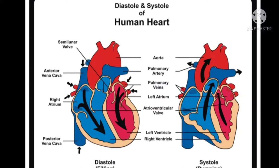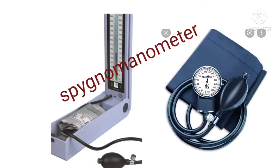When the ventricles contract, forcing blood out of the heart and into the arteries, then there is a drop in pressure as the ventricles refill. BP is always measured in the upper arm artery. BP varies throughout the body, so a standard place must be used so that a person's blood pressure can be compared over time.